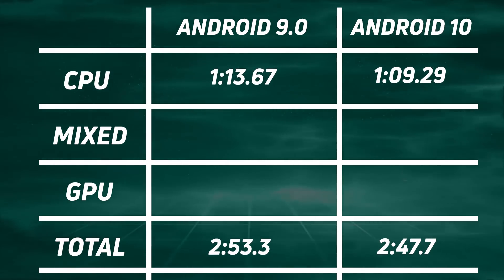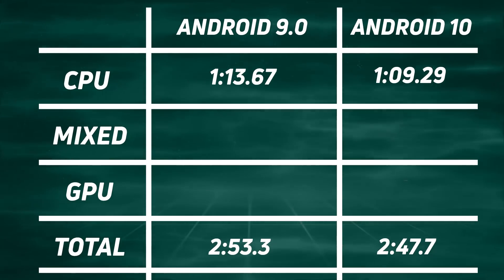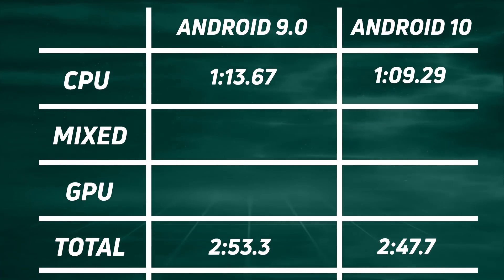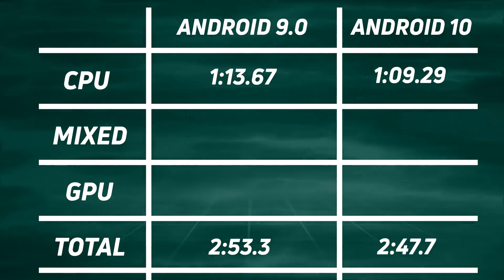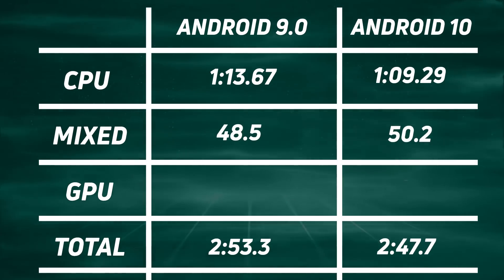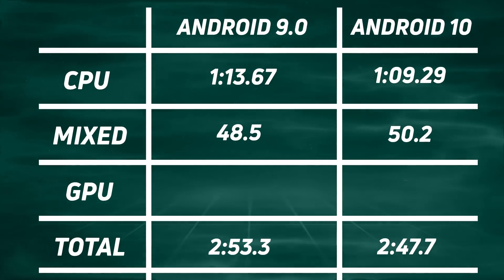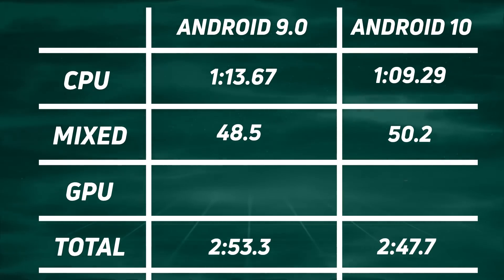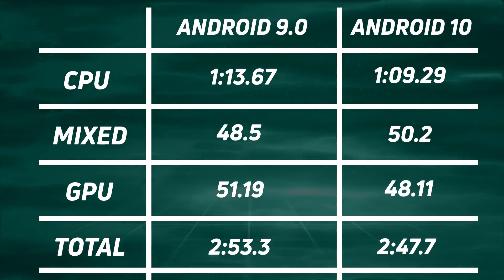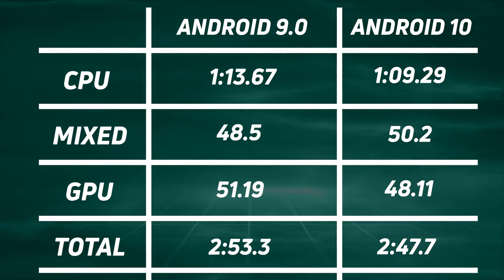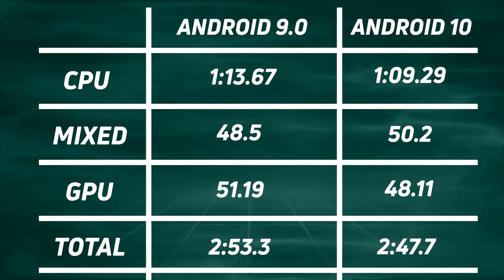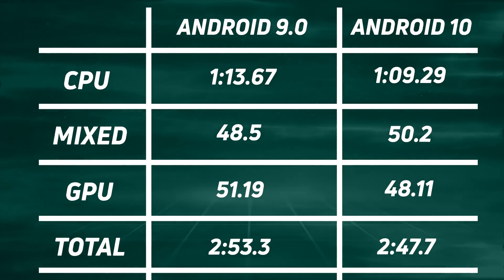Looking at the times: the Android 10 device came in at 2 minutes and 47.7 seconds, and over six seconds later, Android 9 on the exactly same device came in at 2 minutes and 53.3 seconds. Looking at CPU time: 1 minute 13 for Android 9, and 1 minute 9 for Android 10 — quite a few seconds gained from improvements to the runtime environment. Interestingly, Android 9 did better during the mix test, which includes things like the blur test — 48.5 compared to 50.2. But then on the GPU: 51 seconds for Android 9 versus 48 seconds for Android 10. So basically, improvements in CPU and GPU mean that this is the fastest version of Android ever released.